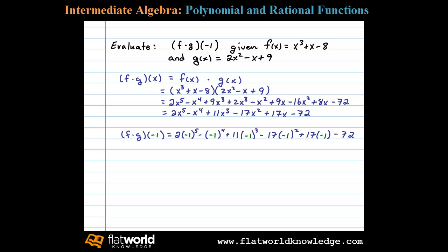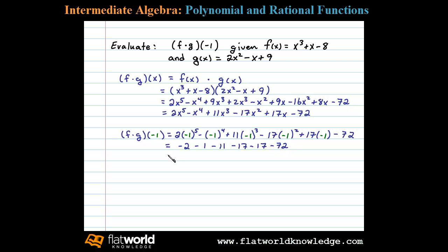Now we'll use this to find f times g of negative 1. I substitute negative 1 in for each instance of x. This leaves us with 2 times negative 1 to the fifth, which is negative 2; minus 1 times negative 1 to the fourth, which is minus 1; 11 times negative 1 cubed gives minus 11; negative 17 times negative 1 squared gives negative 17; 17 times negative 1 is minus 17; and then minus 72. That adds up to negative 120.